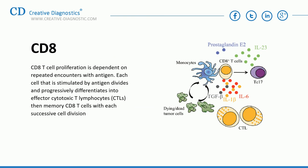CD8 cell proliferation is dependent on repeated encounters with antigen. Each cell stimulated by antigen divides and progressively differentiates into effector cytotoxic T lymphocytes, then into memory CD8 cells, with each successive cell division.